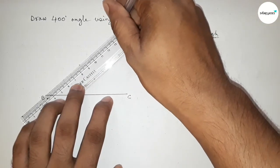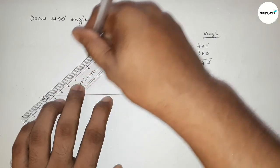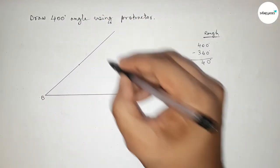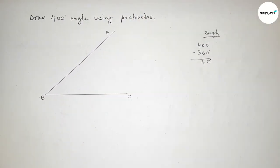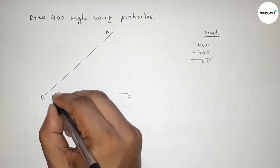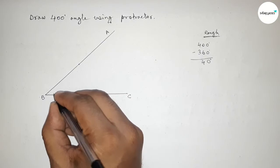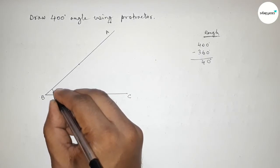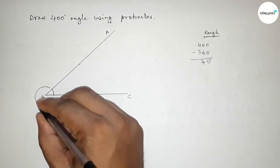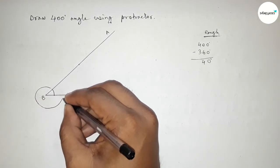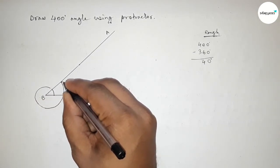Now we have to draw an arc or a curve from the line BC to the line AB by this way. So here drawing an arc or curve from the line BC to the line AB by this way, and this represents a 400 degree angle.